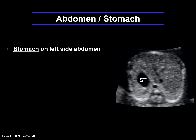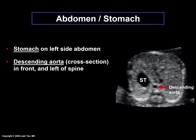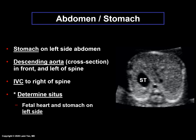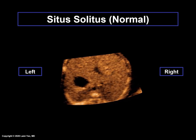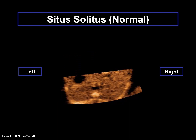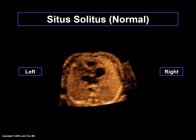Abdomen-Stomach. In this view, the fetal stomach is located on the left side of the abdomen. The cross-section of the descending aorta should be in front and to the left of the spine, while the inferior vena cava is located to the right side of the spine. The situs is determined by comparing the cardiac apex position and stomach. Both the fetal heart and stomach should be on the left side. If they are not, then situs abnormalities should be suspected. Normal cardiac situs is situs solidus, with the left fetal side showing the stomach, cardiac apex, and descending aorta, while on the right side, the liver and inferior vena cava should be visualized.